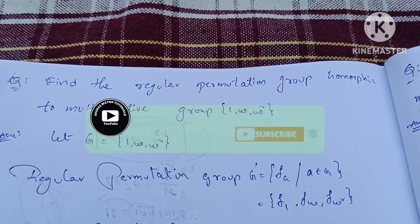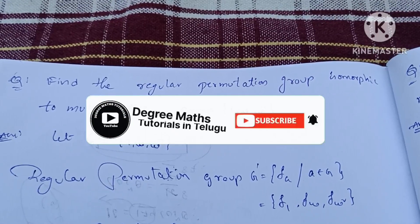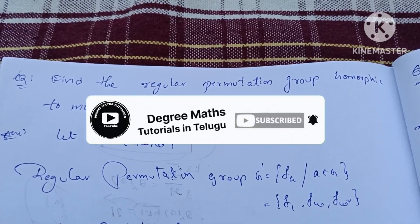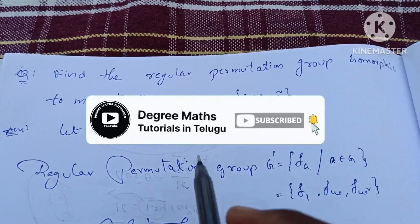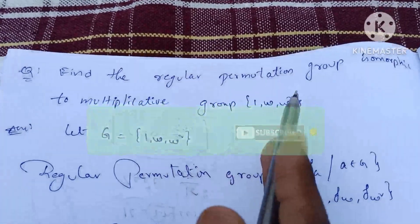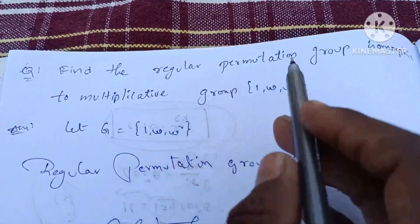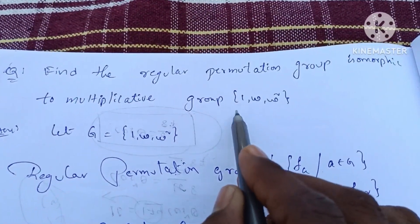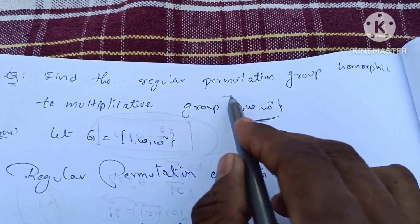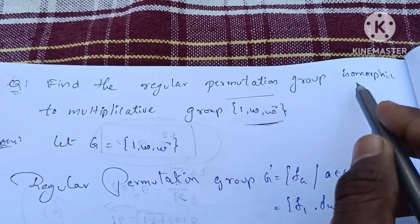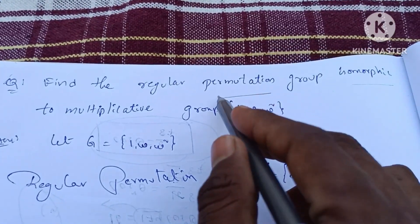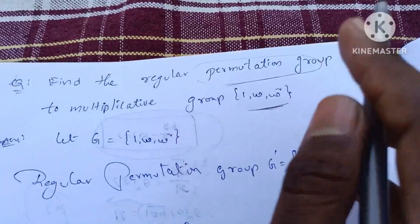If you like this video, please give us a like and support our channel. So this video, find the regular permutation group isomorphic to multiplicative group. This is the permutation group isomorphic. We can comment this regular permutation group.